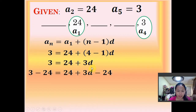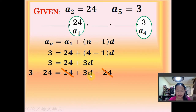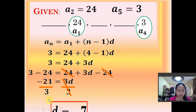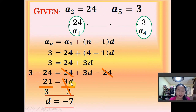Applying the addition property of equality, we subtract 24 from both sides (adding negative 24) to eliminate the 24. So 24 minus 24 leaves only 3d on one side, and 3 minus 24 gives negative 21 on the other side: negative 21 equals 3d. To eliminate the numerical coefficient of d, which is 3, we divide both sides by 3. So d equals negative 21 divided by 3, which is negative 7. Therefore, our common difference is negative 7.